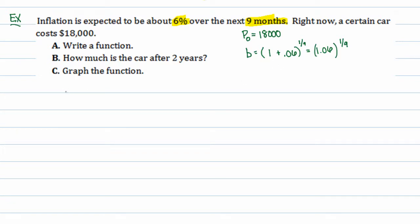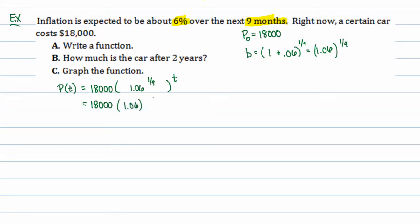Our function is p of t equals 18,000 times 1.06 to the one-ninth power, raised to the t. I prefer to write this as p of t equals 18,000 times 1.06 raised to the t over 9 power. Both forms are equivalent.